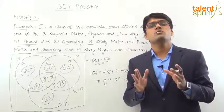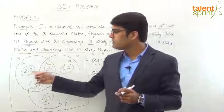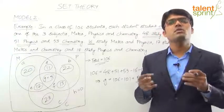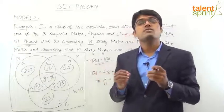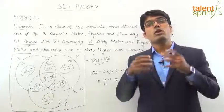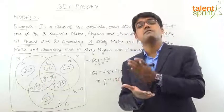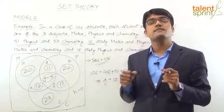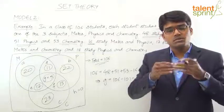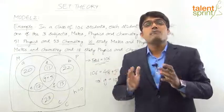Once the Venn diagram is complete, the 5 questions are easy to answer. For example: How many students study only Maths? Answer: 20. How many study only Physics? 22. How many study only Chemistry? 23. How many study all three subjects? 5. How many students study none of the subjects? H = 0. We just need to understand which region each question refers to.